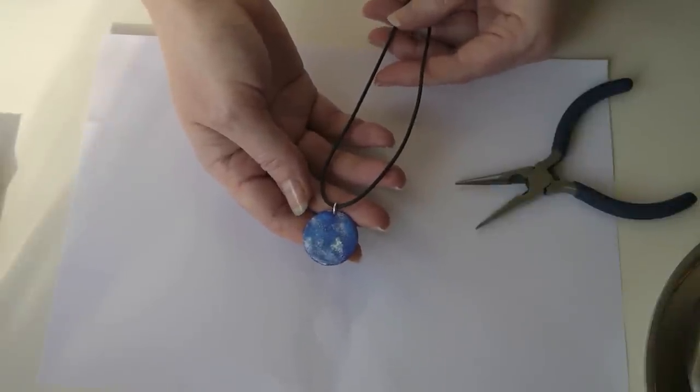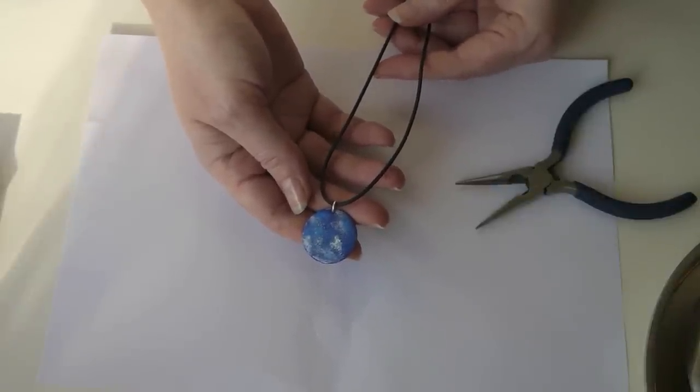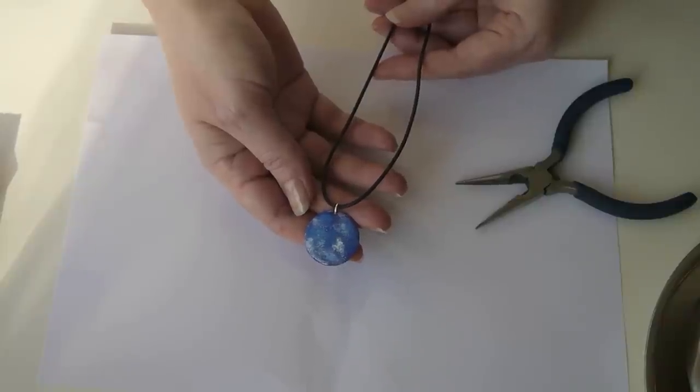As you can see, it is very easy to create an attractive and unique pendant using the F color low melt enamel powders.